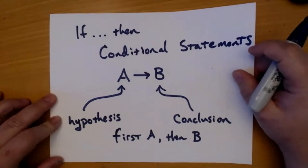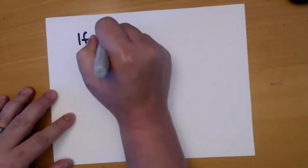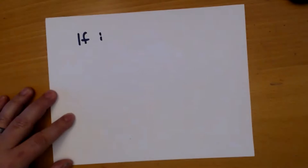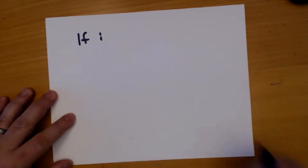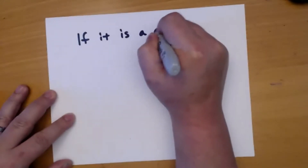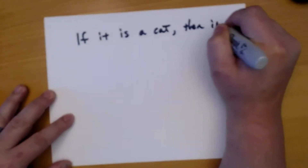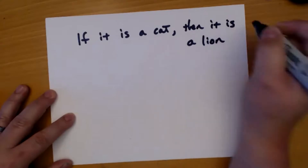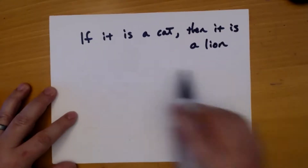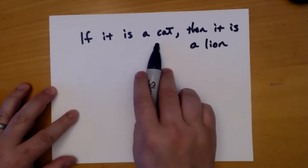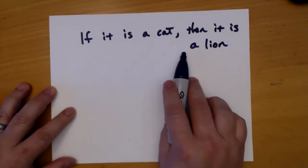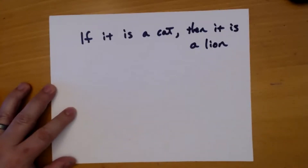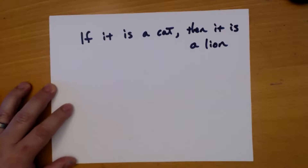Think about the sentence: 'If something is a cat, then it is a lion.' Is this sentence true? Does every cat out there mean it's a lion? Can you prove me wrong? How would you prove me wrong? I'm pointing to an animal and saying it's a cat — so the person in the other room would say it must be a lion. But maybe not.